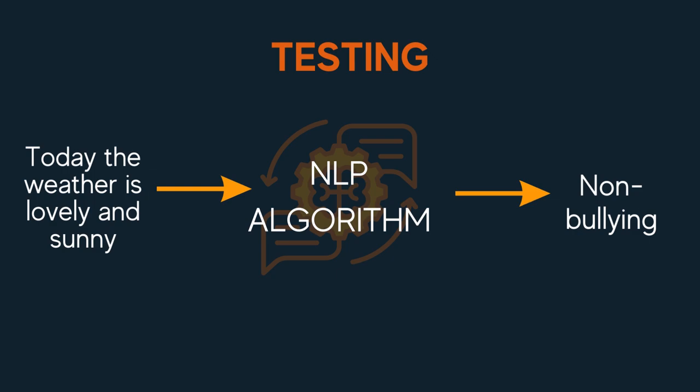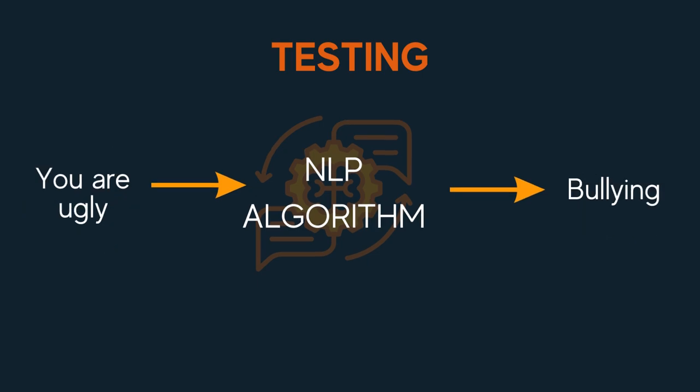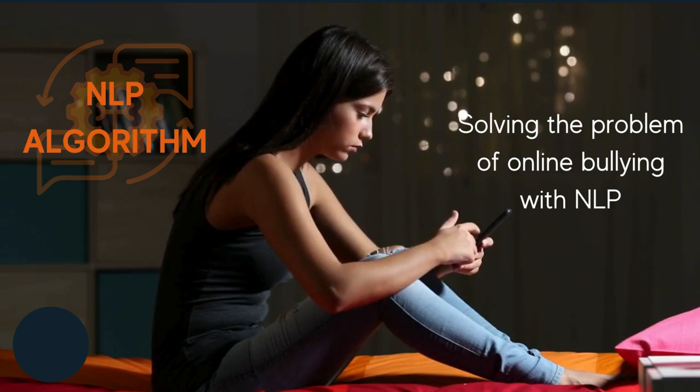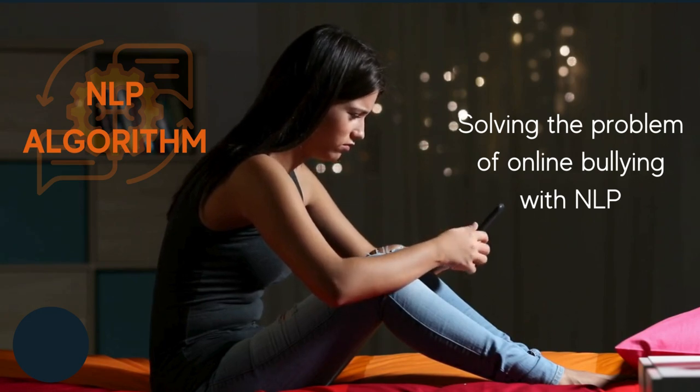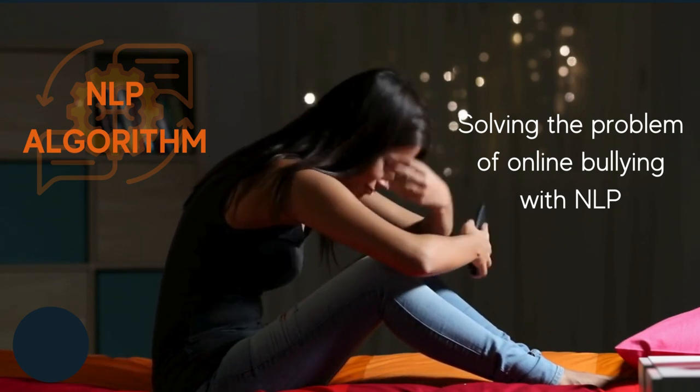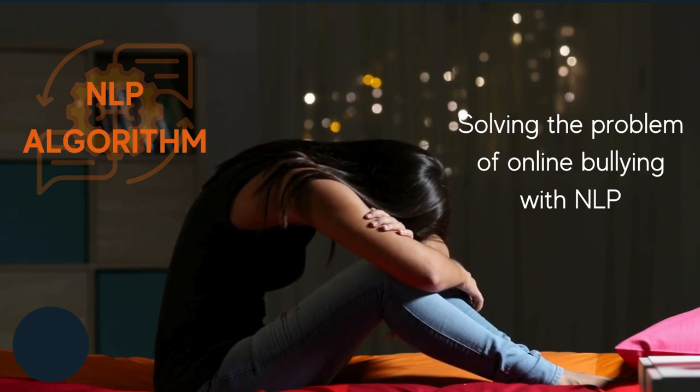Finally, we test whether the machine will correctly label new text we provide. If we feed it with new text, our machine will look at the features and label it into either the bullying or non-bullying category. Once trained, our machine will be able to quickly analyze and identify bullying content across potentially millions of examples, assisting humans in identifying online bullying immediately and taking action before it becomes harmful to individuals and society.